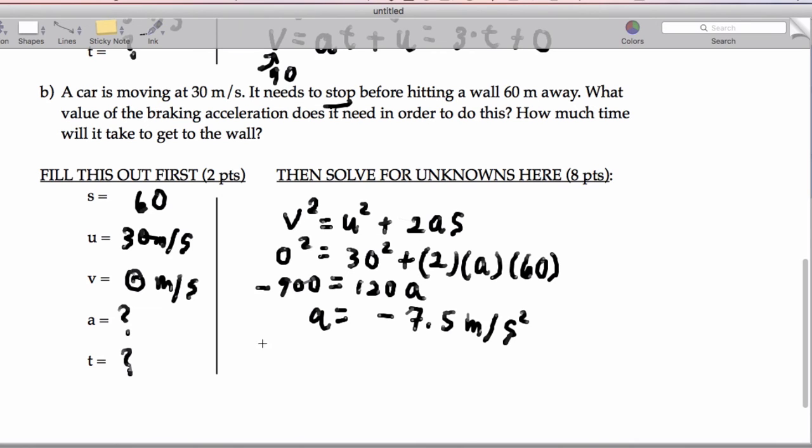Now let's get the time, so we have v equals at plus u. That's going to be 0 equals negative 7.5t plus 30.